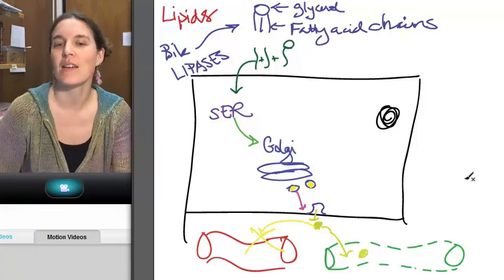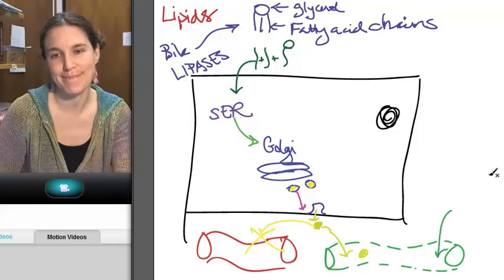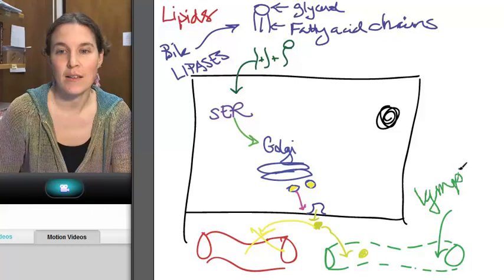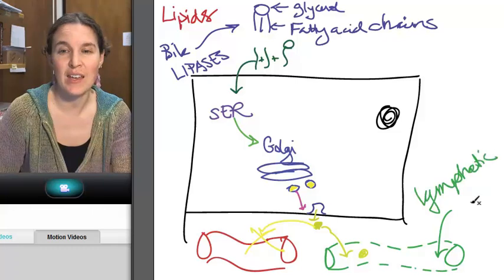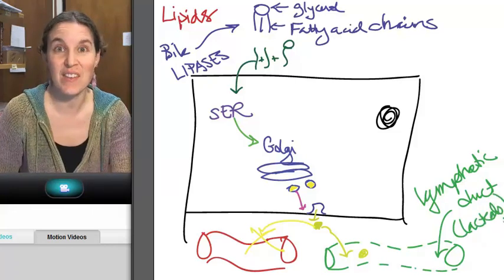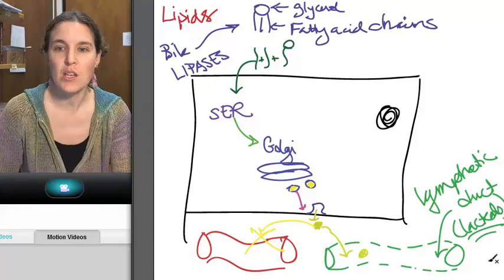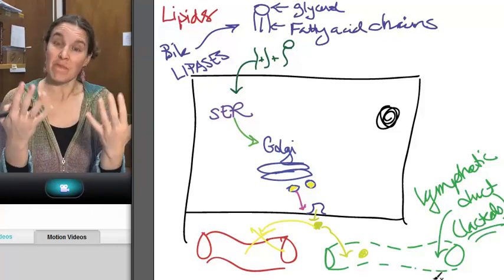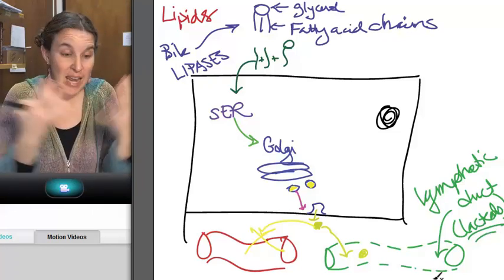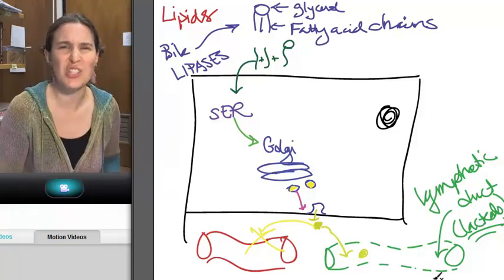And my fat is now inside what system? Lymphatic duct. They're called lacteals in the villi of the digestive system, like the small intestines. So these lacteals have these lymphatic ducts. It's a network of vessels basically, but they're just super leaky.